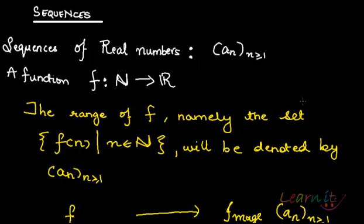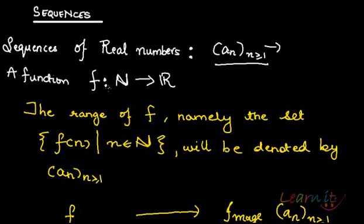Today we will be starting the topic of sequences in real analysis. Sequences of real numbers — any sequence looks like a_n where n is greater than or equal to 1. This is essentially because sequences are indexed by natural numbers. So essentially a sequence is a function f from the natural numbers to ℝ, that is the real numbers.